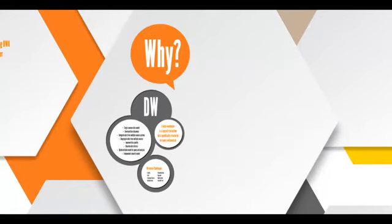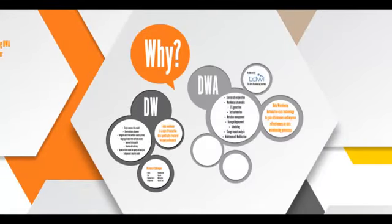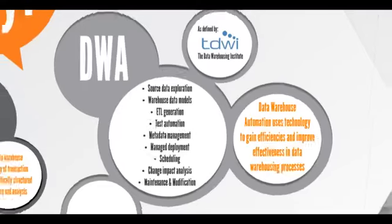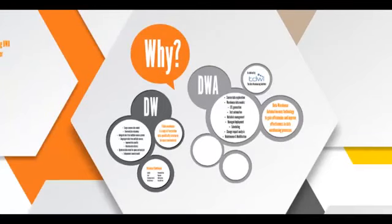Data warehouse automation uses technology to gain efficiencies and improve effectiveness in the data warehousing process. It covers all processes in developing and maintaining a data warehouse, including the typical challenges normally faced when implementing a warehouse using traditional development and implementation processes. Building a data warehouse using data warehouse automation principles will give you the same solution that has always been done, but now you will get it faster, cheaper, and because it always reflects your latest requirements, it will be a better solution.